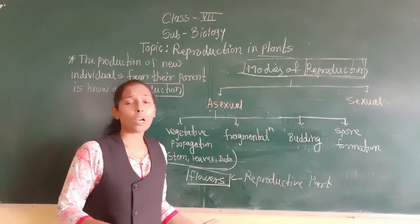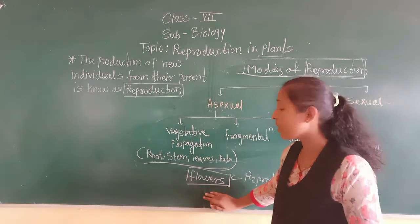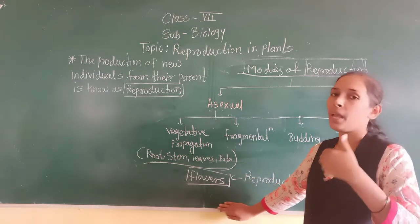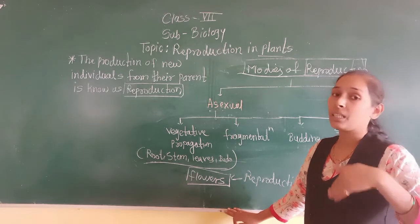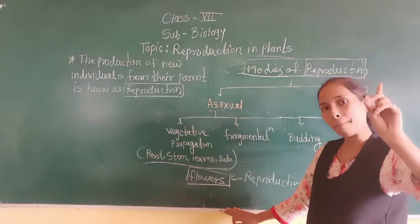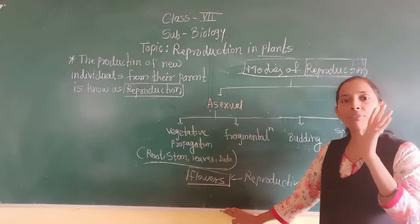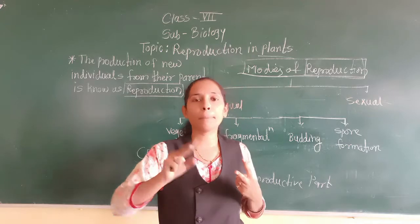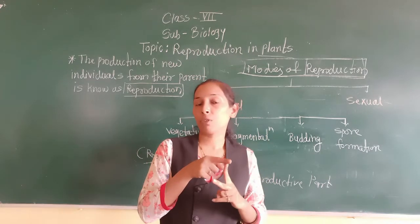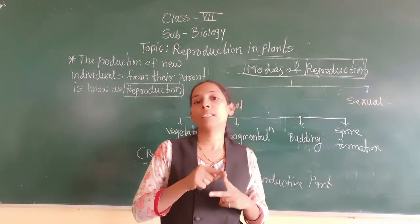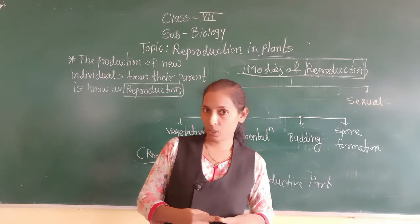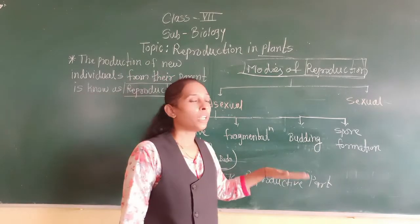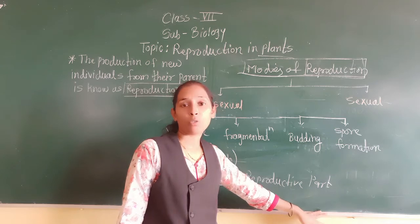That is the reason flowers are called the reproductive part of a plant. A flower may sometimes contain both the male part and the female part — meaning both reproductive organs. In other cases, the flower might contain only male reproductive organs or only female reproductive organs. So there are two cases: first, the flower contains both male and female reproductive organs; second, it contains either male or female reproductive organs. The flower is known as the reproductive organ or reproductive part of a plant.